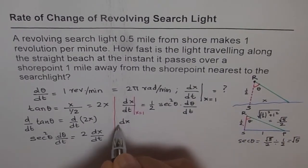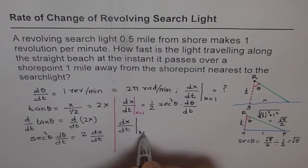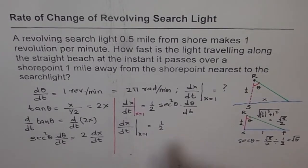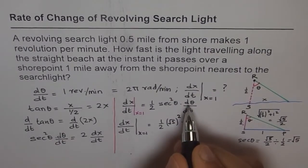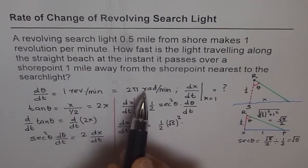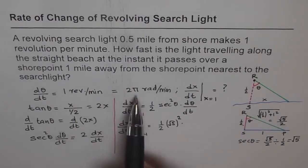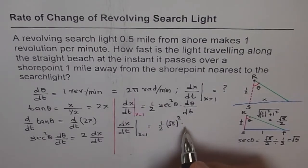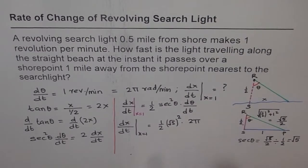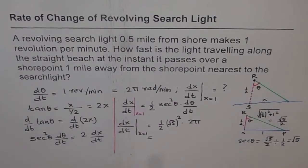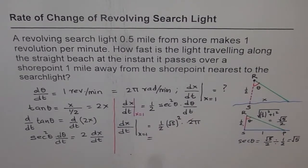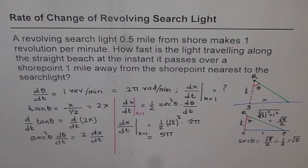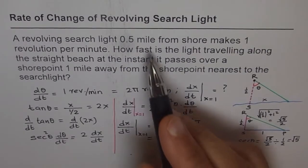Substituting into our equation: dx/dt at x = 1 equals (1/2) · sec²θ · dθ/dt = (1/2) · 5 · 2π. The 2s cancel, giving 5π. It is very important to convert to radians when working with trigonometric functions. So the answer is 5π miles per minute.